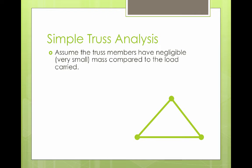To do truss analysis, we simplify things by making some assumptions. We need to do this to make calculations easier. The first assumption is that the truss members have negligible or very small mass compared to the load they're carrying. This means we don't have to worry about their mass when doing calculations. Second, we assume that the members are connected at joints that pivot.